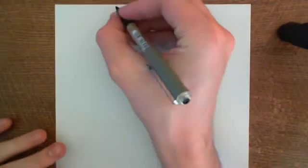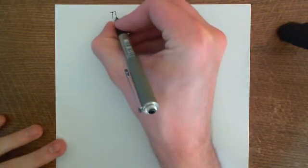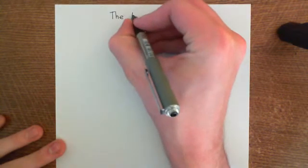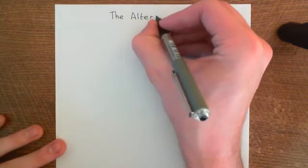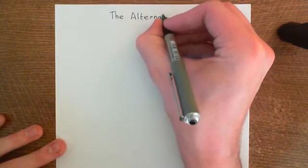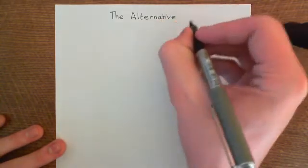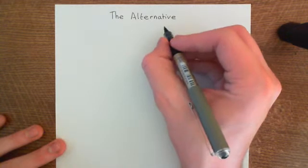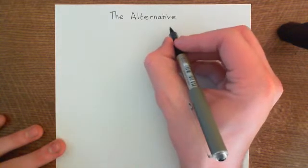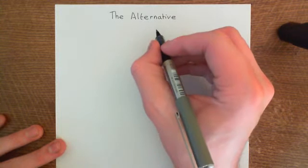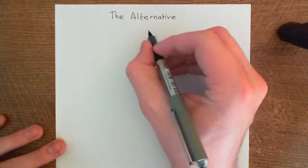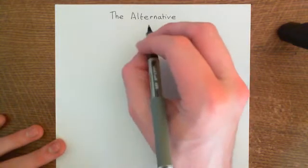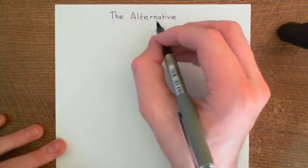Welcome to this next video in which we are going to look at the alternative complement pathway. This is the final of the three complement pathways. We've looked at the classical complement pathway, which was activated by antibody-antigen complexes on the surface of a microbe. We've then looked at the mannose-binding lectin pathway, activated by terminal mannose and glucose monosaccharides on polysaccharides and oligosaccharides on the cell surface membrane.